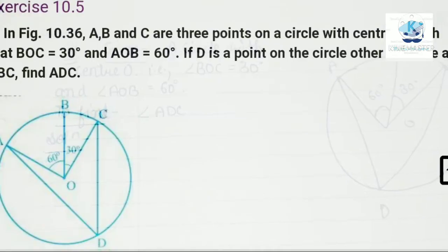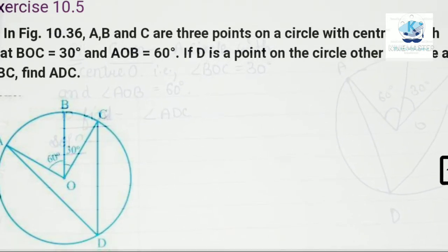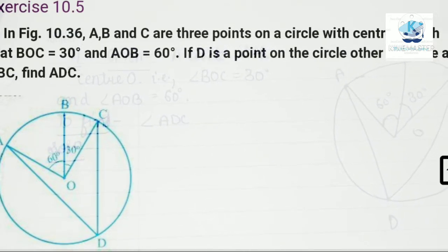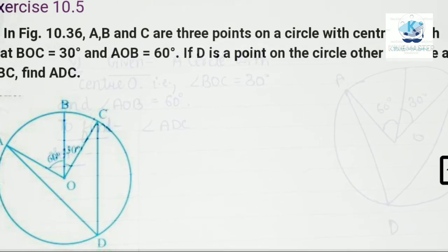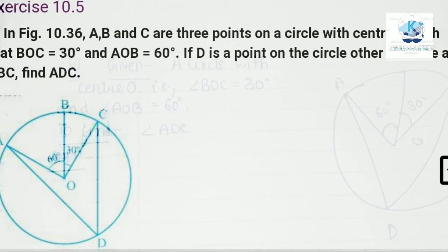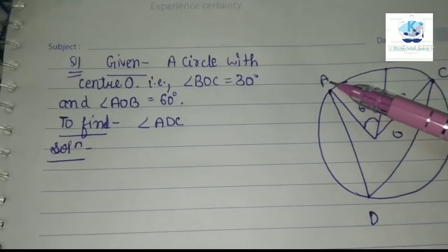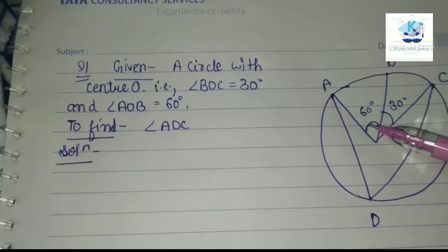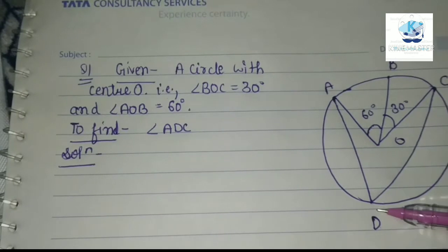Question 1: In figure 10.36, A, B, and C are 3 points on a circle with center O such that angle BOC is equal to 30 degrees and angle AOB is equal to 60 degrees. If D is a point on the circle other than the arc ABC, find angle ADC. I have drawn my figure — this is my circle, angle AOB is 60 degrees, angle BOC is 30 degrees, and this is my angle ADC.